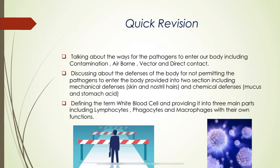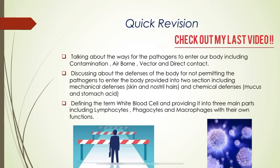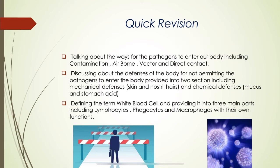A quick revision from part one: we discussed the ways for pathogens — transmissible pathogens — to enter our body, including contamination, airborne, vector, and direct contact. We also discussed the defenses of the body, divided into two sections: mechanical defenses such as skin and nostril hairs, and chemical defenses including mucus released by goblet cells and stomach acid — hydrochloric acid.